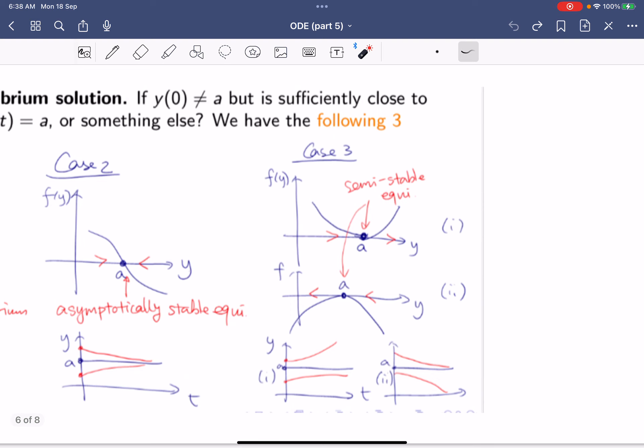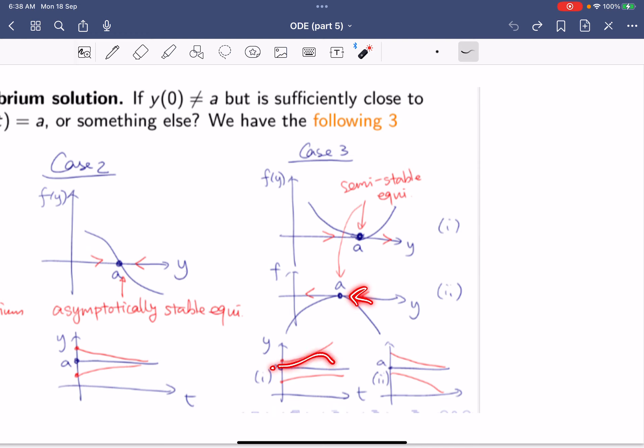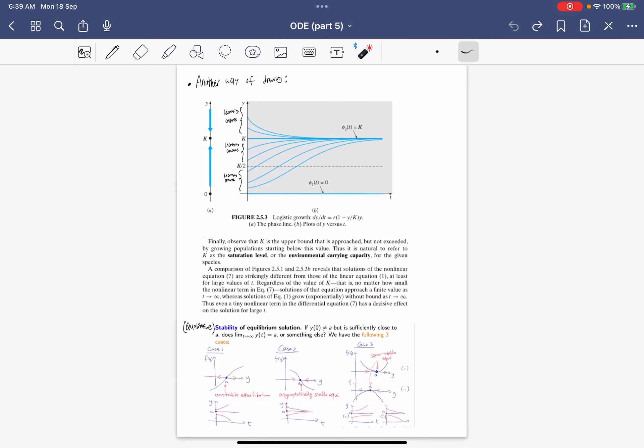In case 3, you just increase in one direction or decrease in one direction. One side will increase all the way, one side will increase towards a, one side will decrease towards a, one side will decrease all the way. This is what is known as a semi-stable equilibrium point. These are the characteristics of stability of an equilibrium solution.